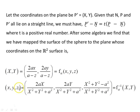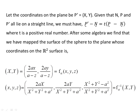The inverse takes us back the other way: the coordinates on the manifold expressed in terms of the coordinates on the plane. So the forward map takes us from the manifold to the plane, and the inverse takes us back from the plane to the manifold. The chart (U_alpha, F_alpha) is composed of the set U_alpha — the set of ordered pairs (X, Y) such that X, Y belong to the reals — and the map F_alpha from the manifold coordinates (X, Y, Z) to the plane coordinates (capital X, capital Y).